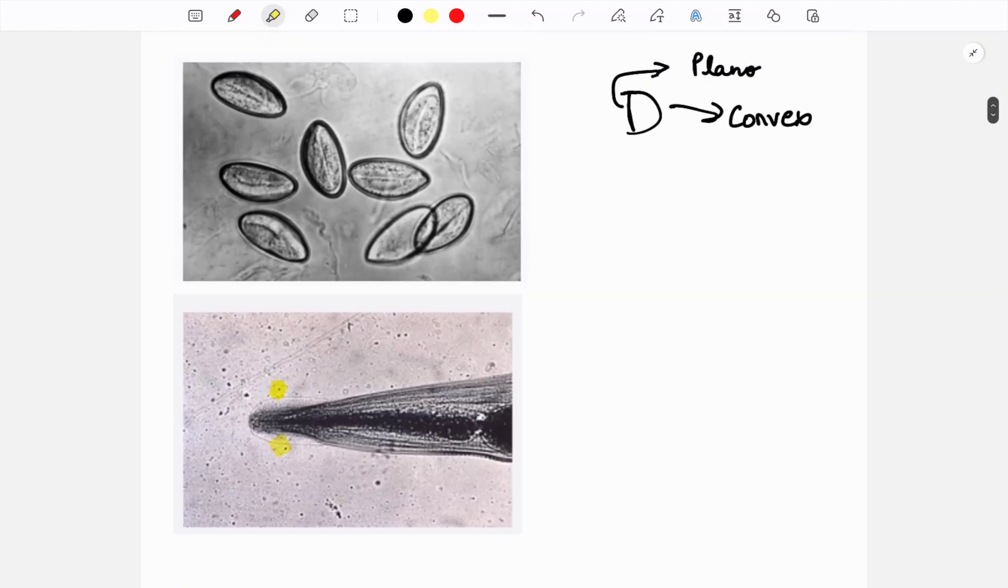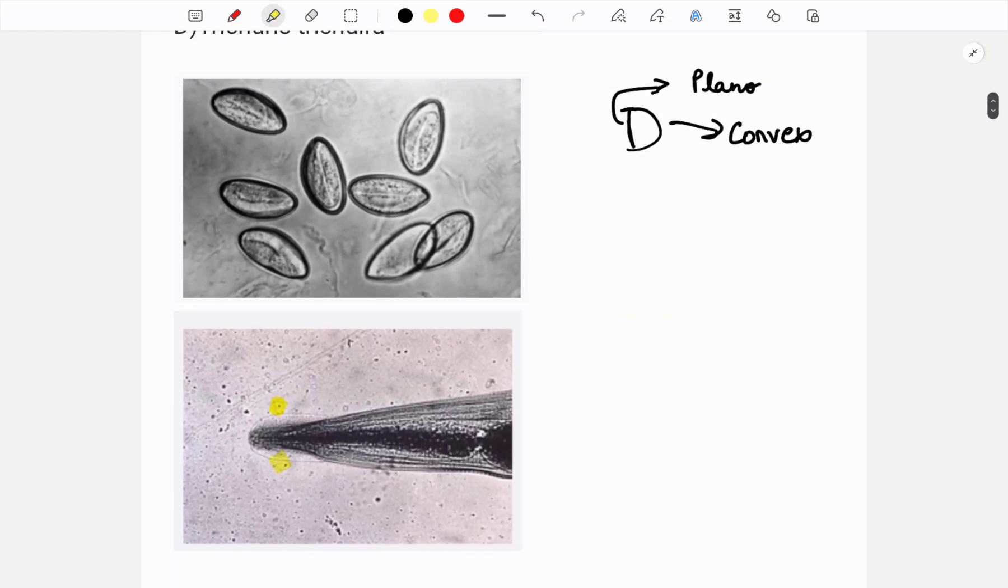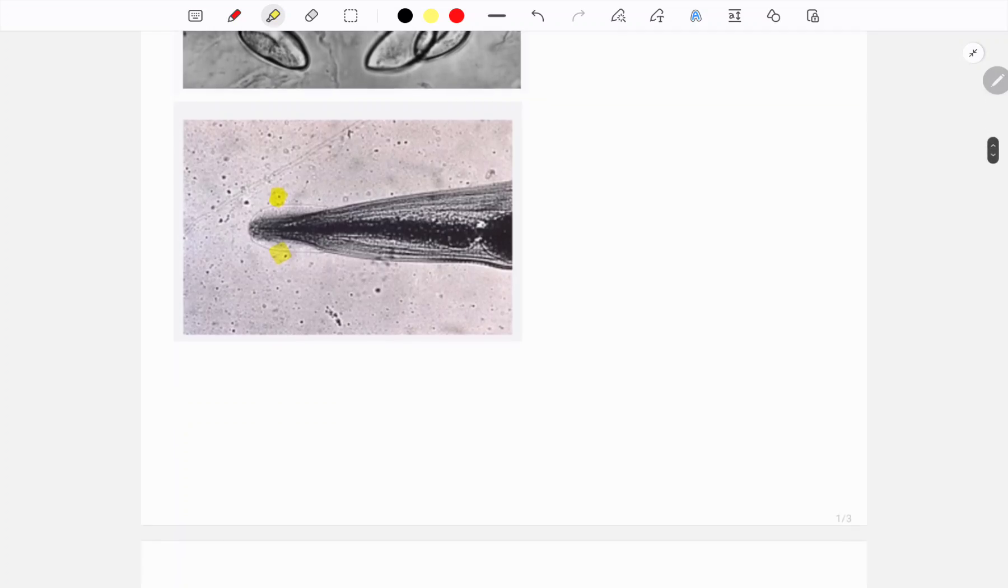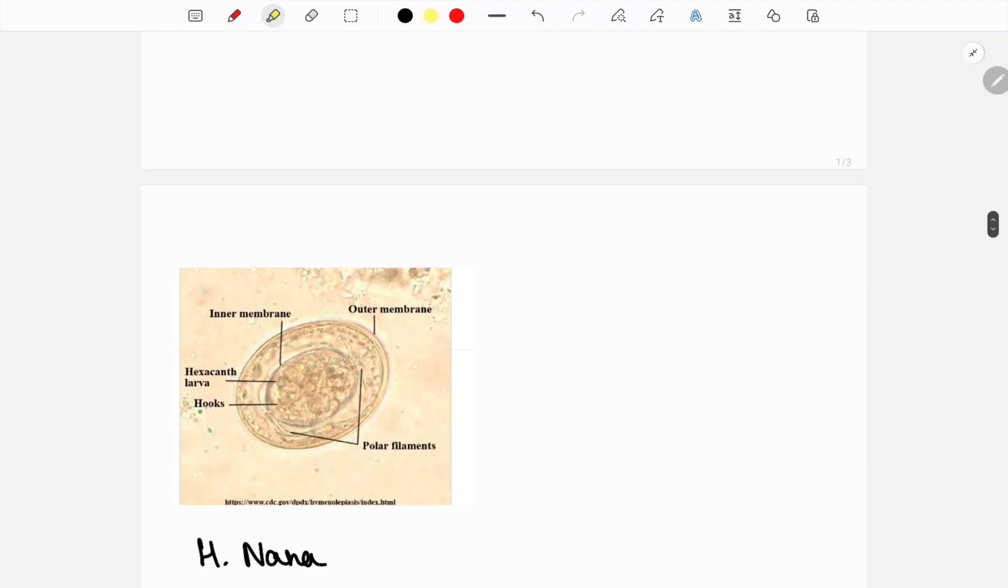The head shown here has a characteristic feature which is not very visible - it's very light. Here we can see that cervical alae, two folds over the head, that is the characteristic feature of Enterobius vermicularis.